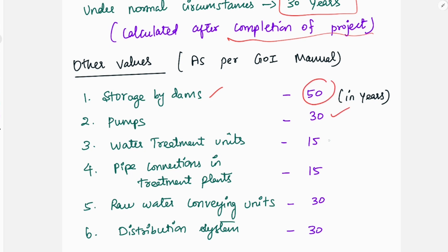The treatment is 15. The pipe connection in the treatment plant is 15. The conveying unit is 30. The distribution system is 30. Then, the dam is for 50 years. That's the maximum. The pump is 30. The conveying unit is 30. The water treatment unit, the filtration unit is 15 years.